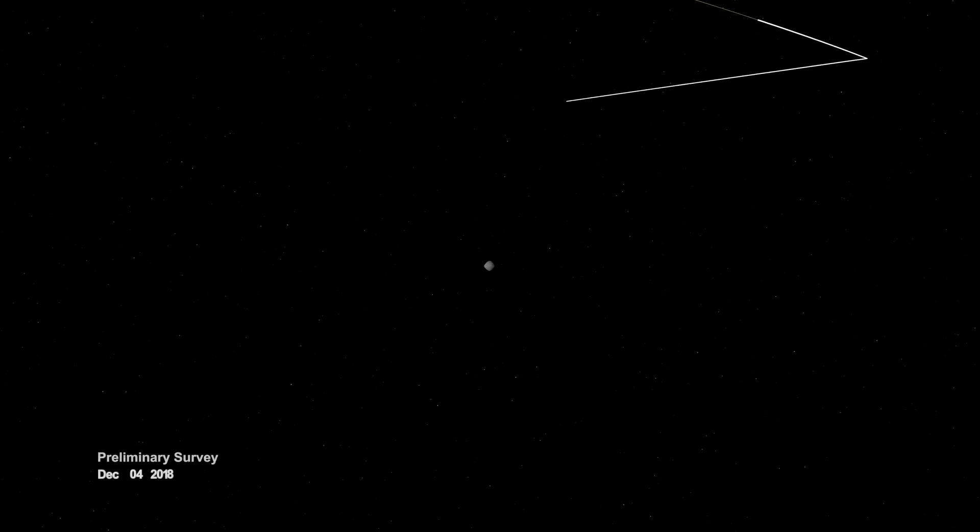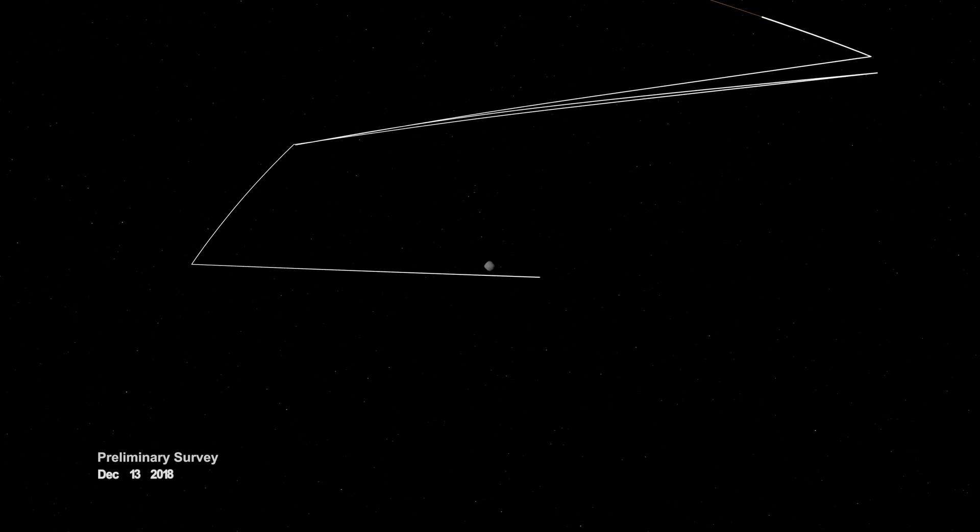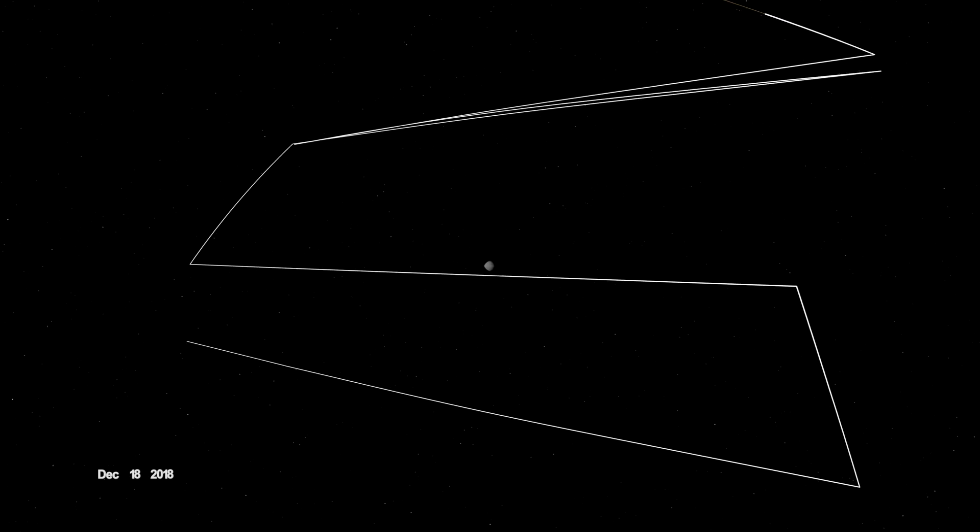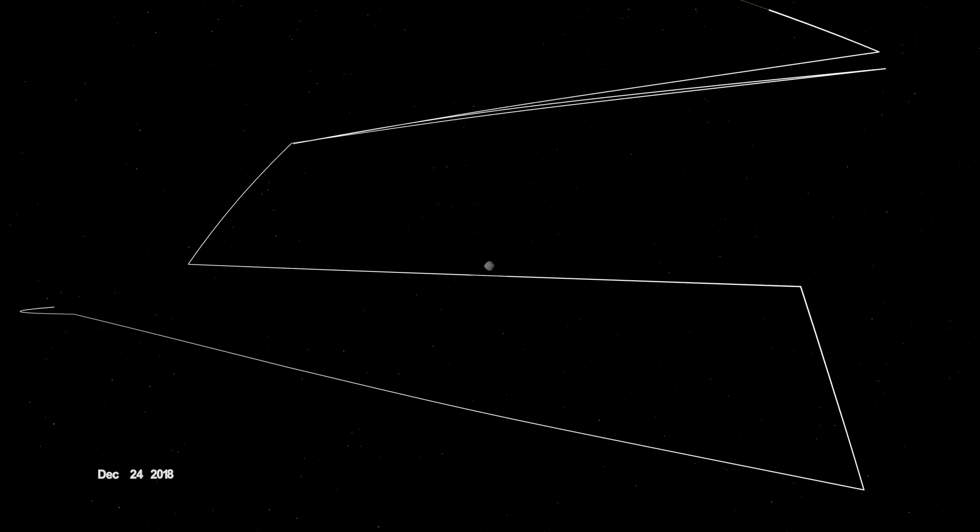And since late 2018, the place that NASA's OSIRIS-REx mission has called home. When OSIRIS-REx arrived, it began wrapping Bennu in a complex web of observations, starting with a preliminary survey of its size, shape, mass, and spin.